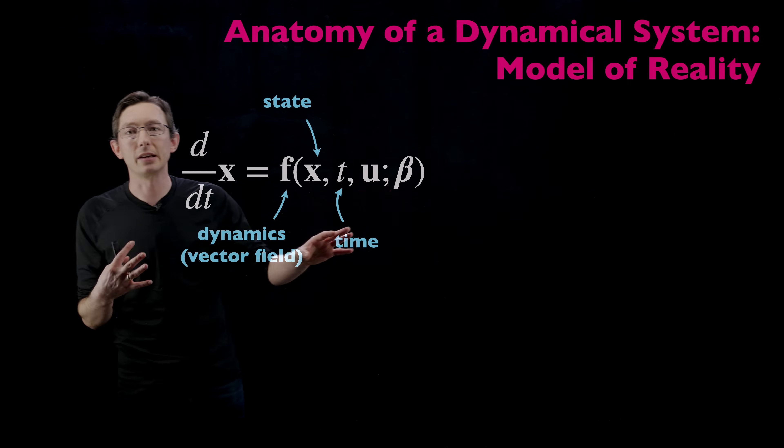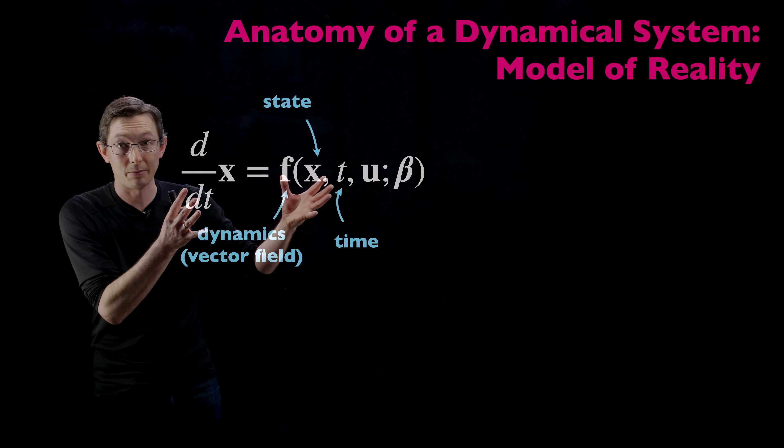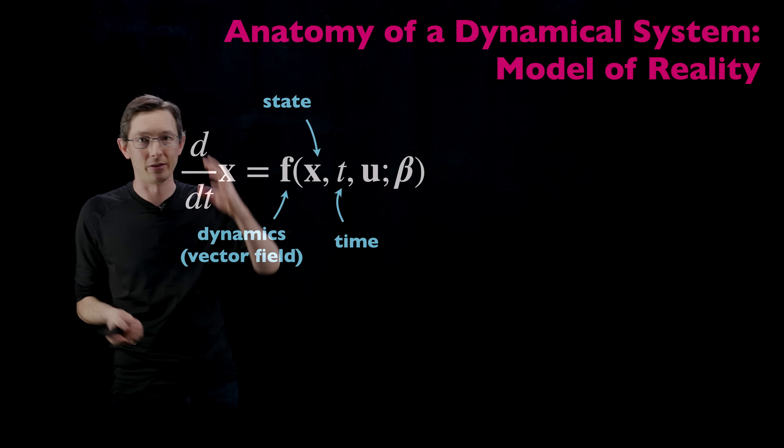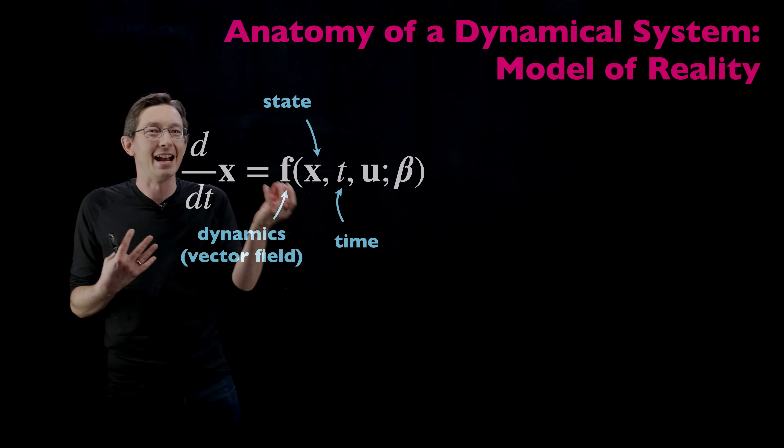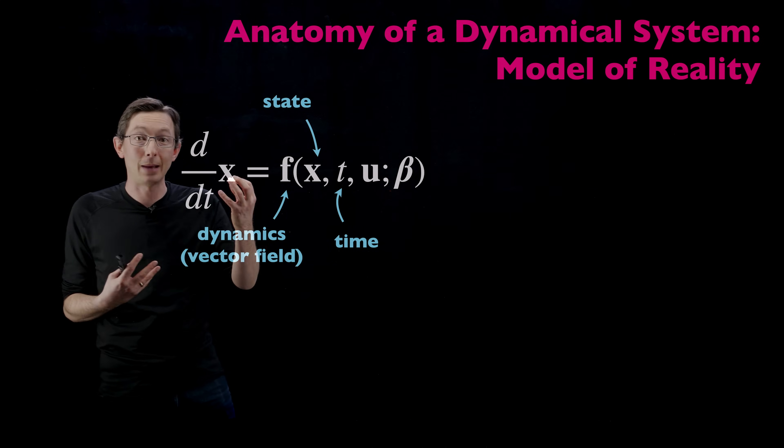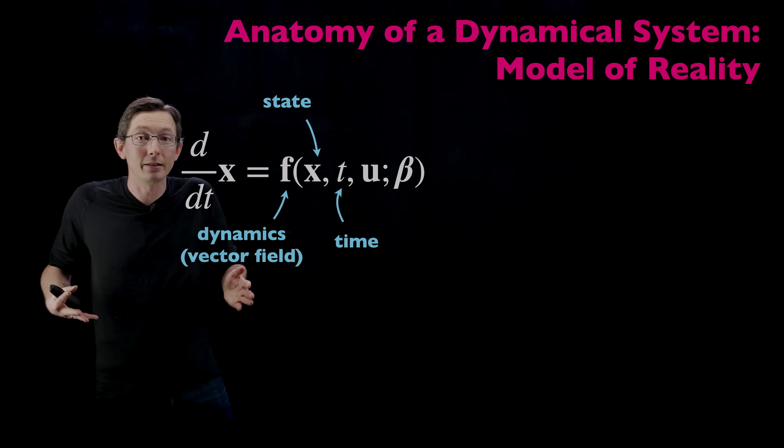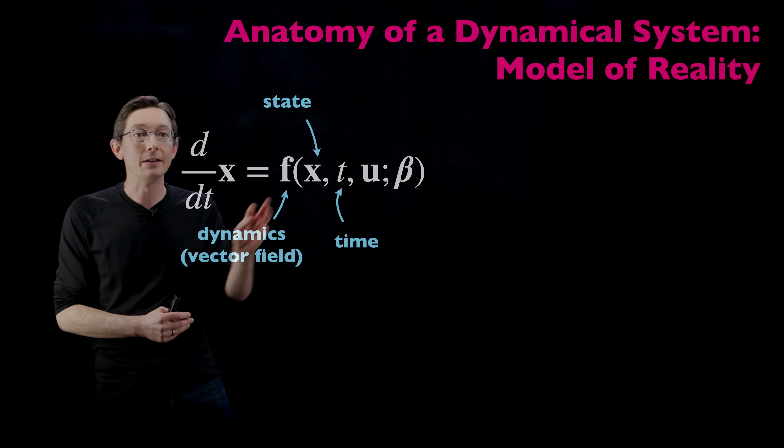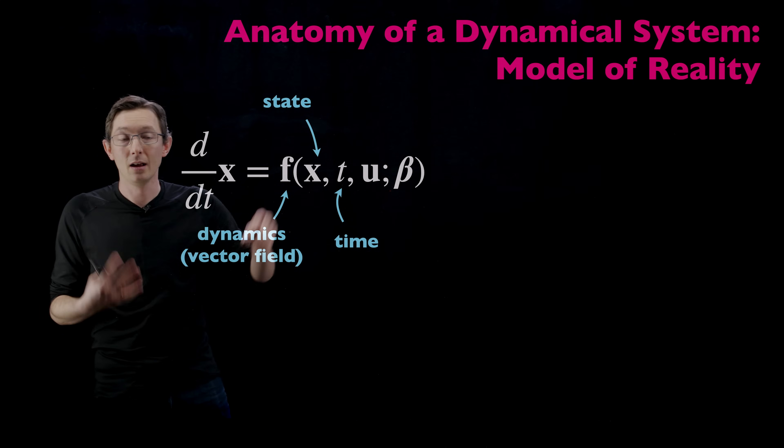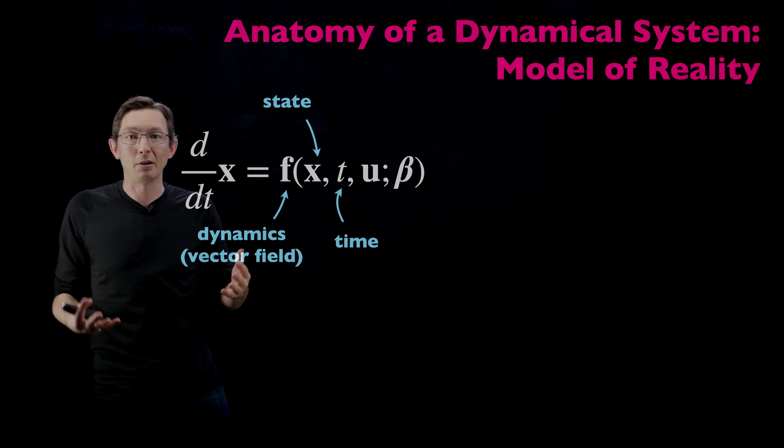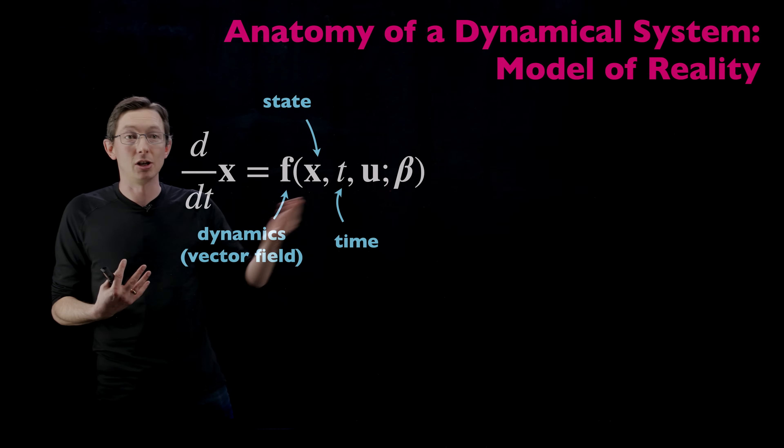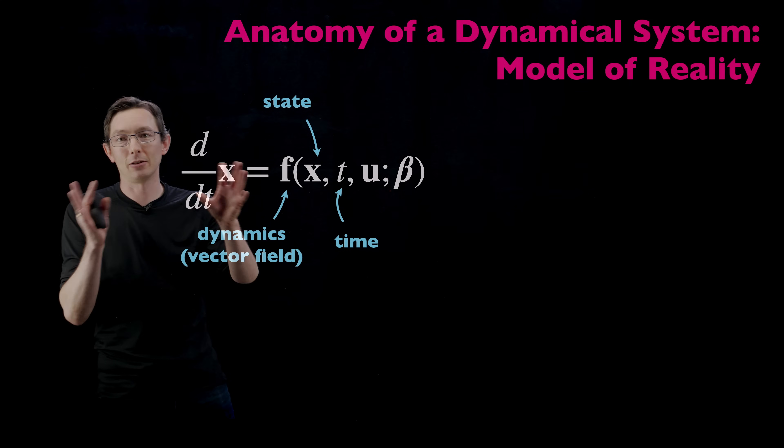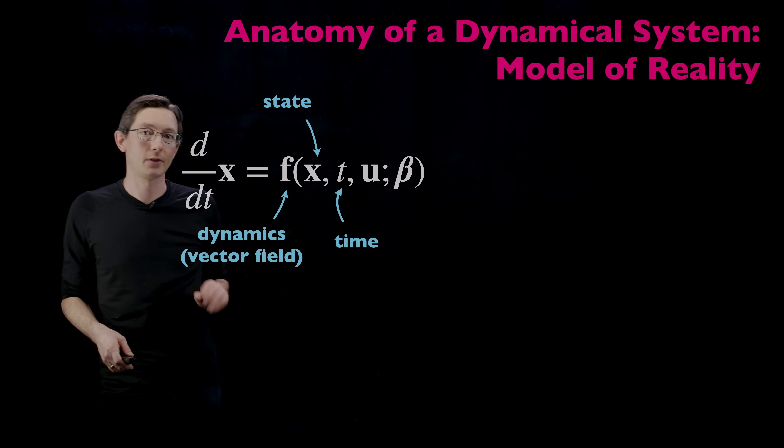T is time and this is really important because in lots of dynamical systems, the system itself changes in time. Think about your brain state. The dynamics, the equations that would describe how your brain works are fundamentally different when you're sitting here watching a video lecture versus when you're asleep. Different dynamics. So this is time varying. The weather might change. The climate might change. The ocean dynamics, the vector field of the ocean changes in time.